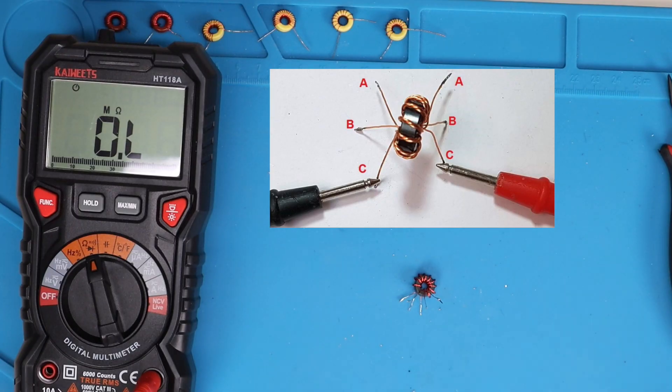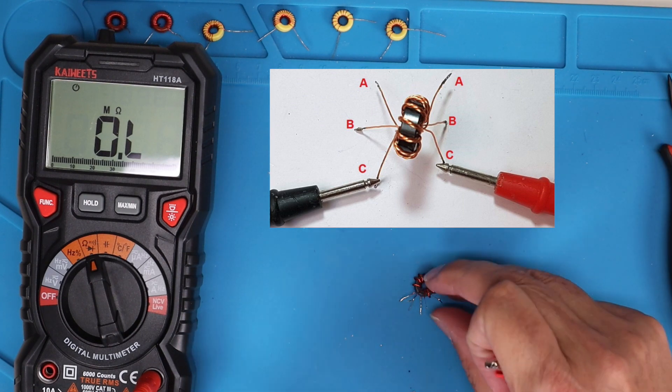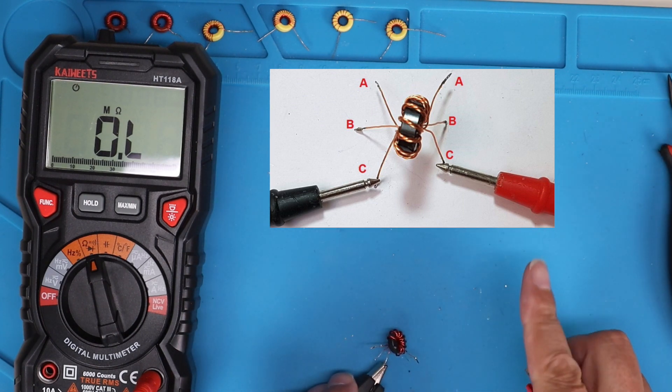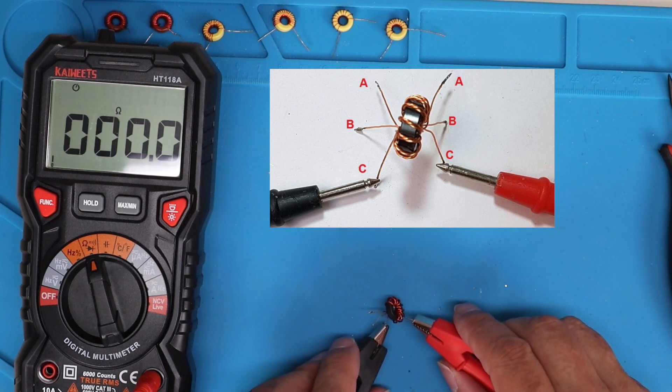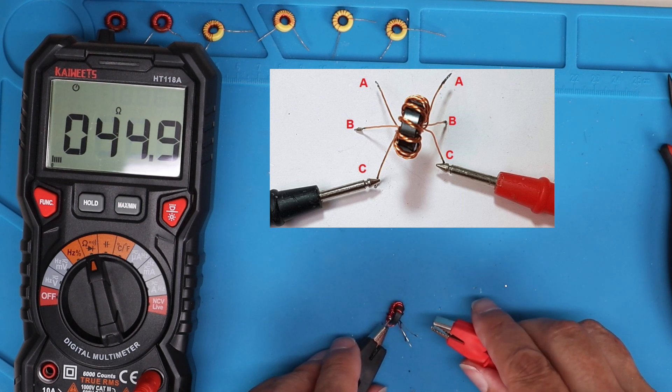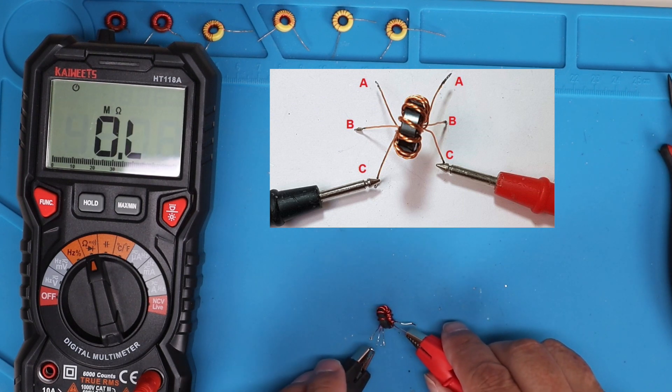Now that we got the wires tinned, we need to check the continuity between each of the leads and make sure that we have, like in the diagram, A goes to A, B goes to B, C goes to C, etc. So as you're teasing these out, make sure that you align them so they're like in the diagram.